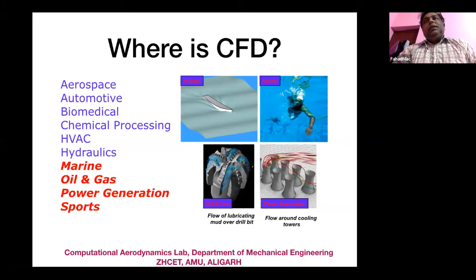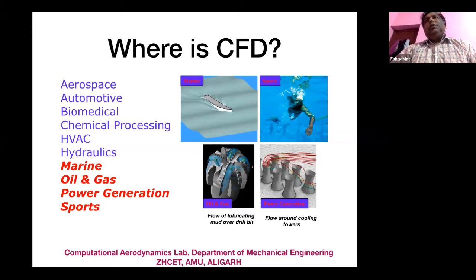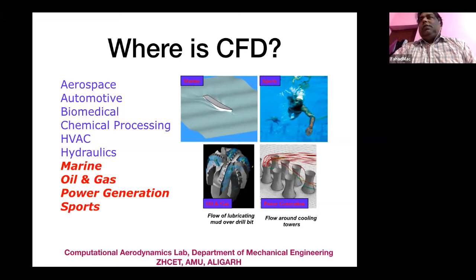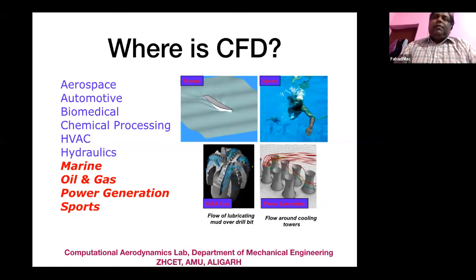Another example involves dolphins, which have compliant surfaces on their bodies — these reduce shear stress in the flow around them. Swimmer Ian Thorpe from Australia used a swimming suit with similar compliant surface properties and won many medals. People have been using CFD for a wide variety of applications.